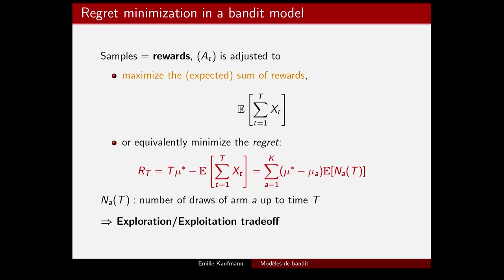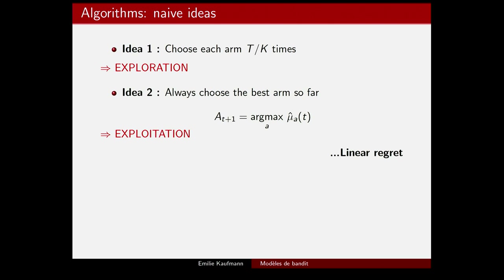To minimize regret, we have to do an exploration-exploitation trade-off: exploration because we need to draw all arms to estimate their means, but we also want to focus on the best arm to maximize reward. A pure exploratory strategy allocates budget evenly between arms — this is bad because every suboptimal arm is drawn a linear amount of time, making regret linear. A pure exploitative strategy samples each arm once, then always plays the current empirical best arm — this is also bad, because with probability 1 - mu*, the first draw of the best arm gives 0, and you never play it again.